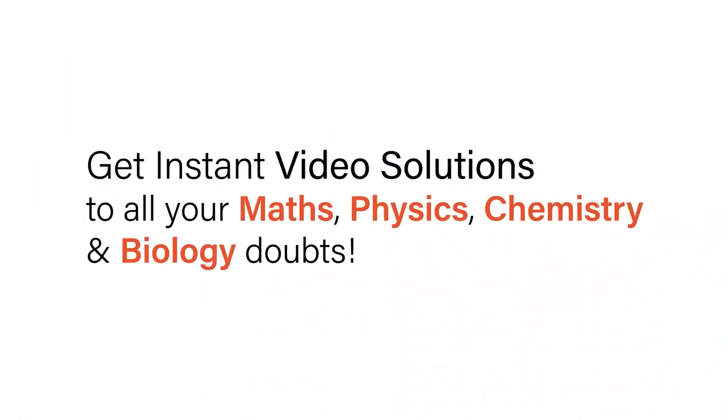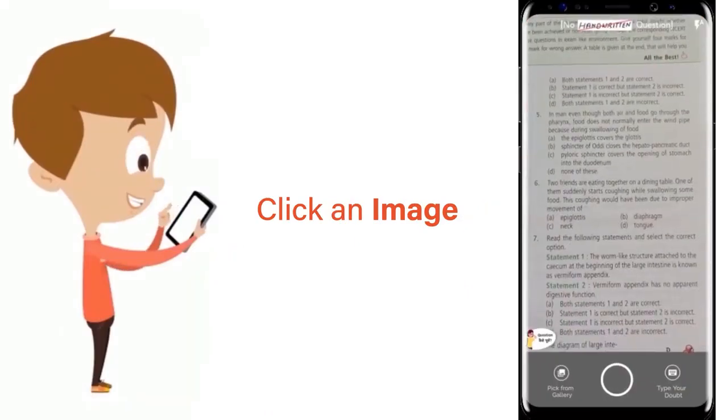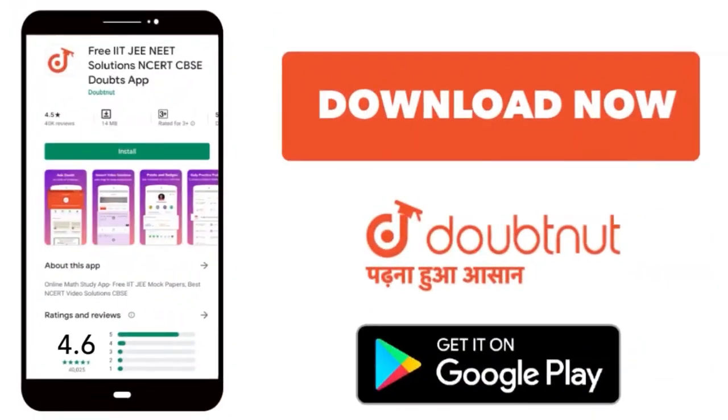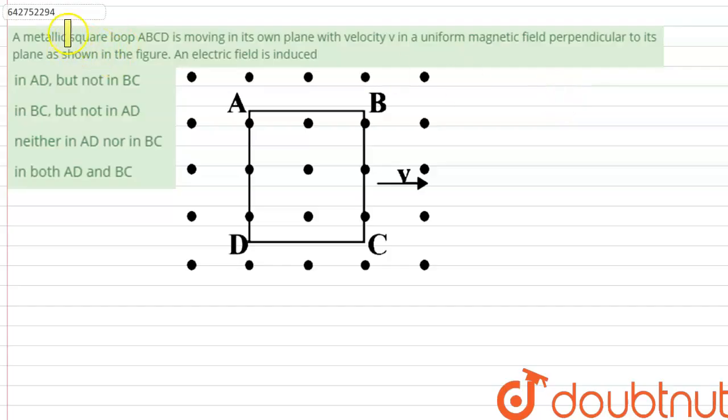With Doubtnut, get instant video solutions to all your maths, physics, chemistry, and biology doubts. Just click the image of the question, crop the question, and get instant video solution. Download Doubtnut app today. Hello everyone, a metallic square loop ABCD is moving in its own plane with velocity v in a uniform magnetic field perpendicular to its plane.